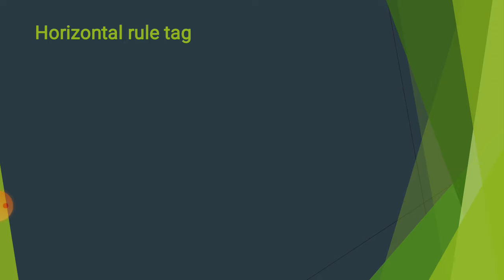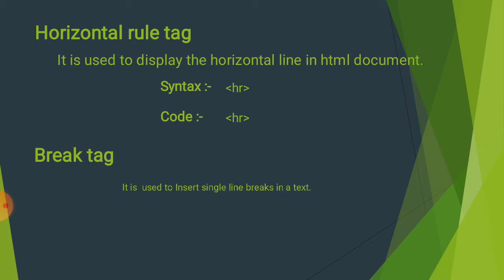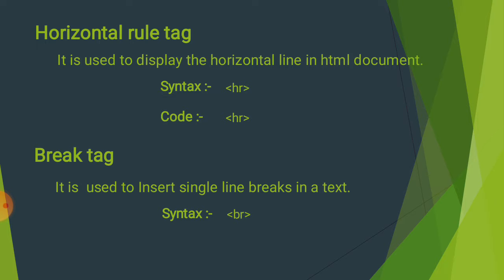Horizontal Rule Tag (HR Tag): यह एक प्रकार का line mention करने के लिए use किया जाता है browser पर। Syntax: single HR tag — कोई closing tag नहीं। Code भी single HR tag होता है। Break Tag (BR Tag): It is used to insert a single line break in the text. एक text से दूसरे के बीच में break लाने के लिए use करते हैं। Syntax और Code: single break tag — कोई closing tag नहीं।